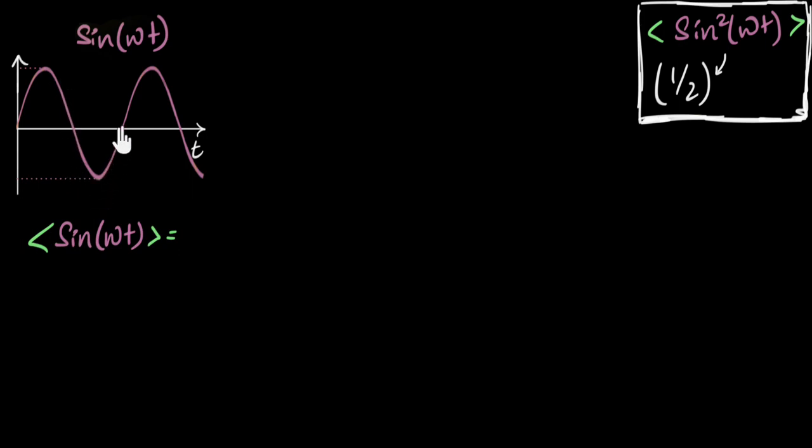Well, because sin is a symmetric function, I can say if I take the mean value over one complete cycle, then when I add up all the values of i's over here and over here, they're gonna give me zero. Because for every positive value over here, I will find a negative value. For i₀, I have minus i₀. So they will all cancel out and I'll get zero.